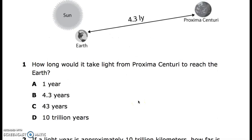Question number one. How long would it take light from Proxima Centauri to reach the Earth? A. One year, B. 4.3 years, C. 43 years, D. 10 trillion years.